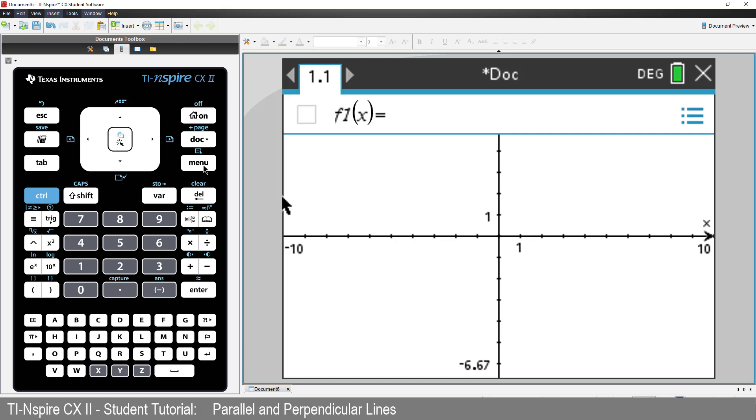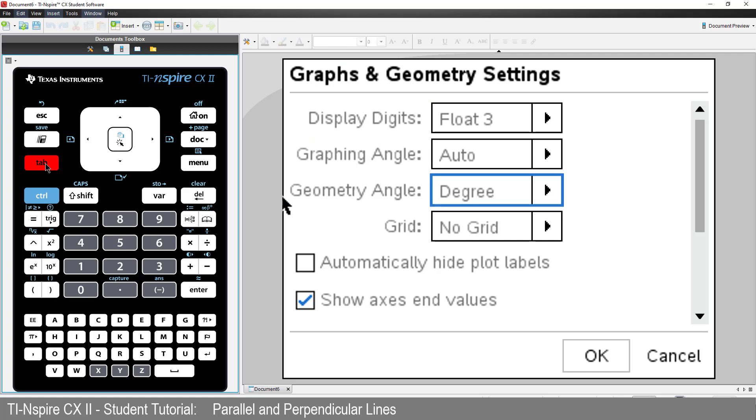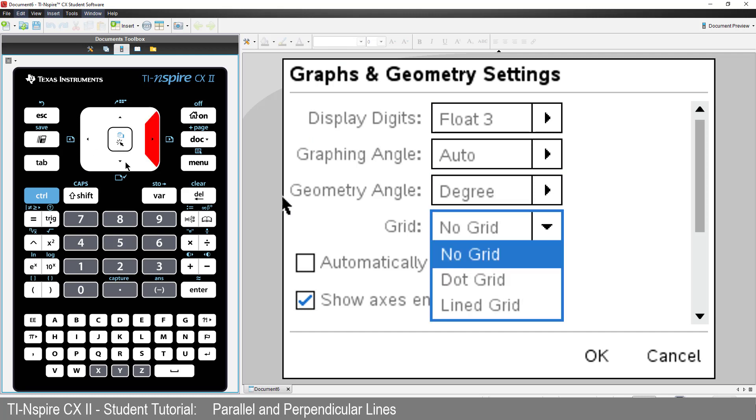Press Menu, Settings and tab down to Grid and select Dot Grid. Then press Enter.